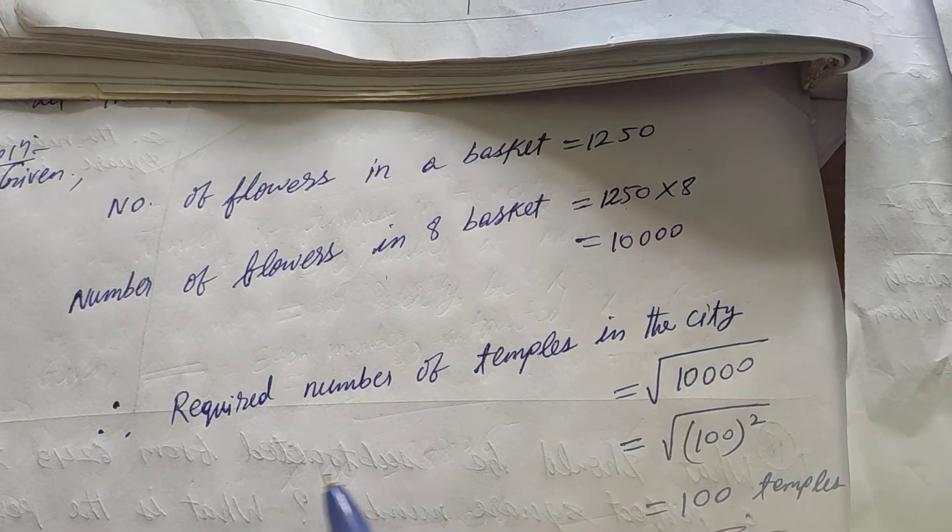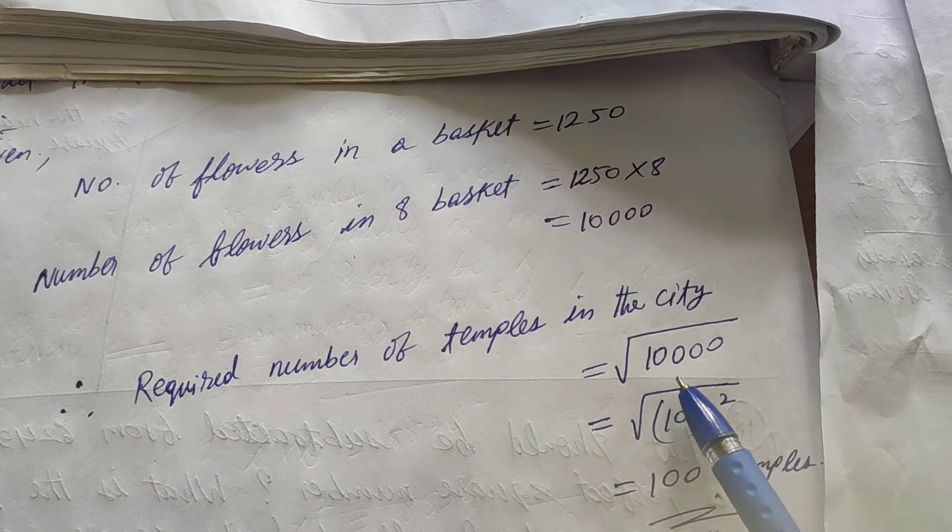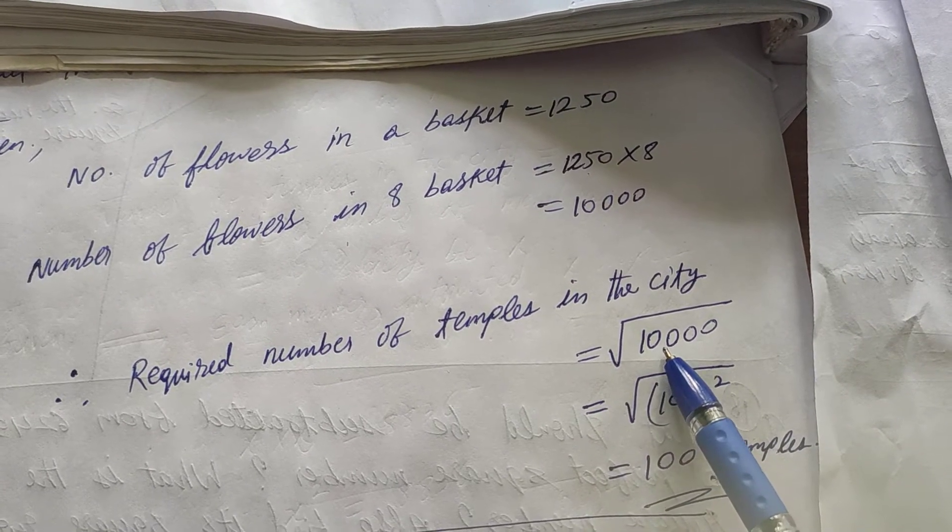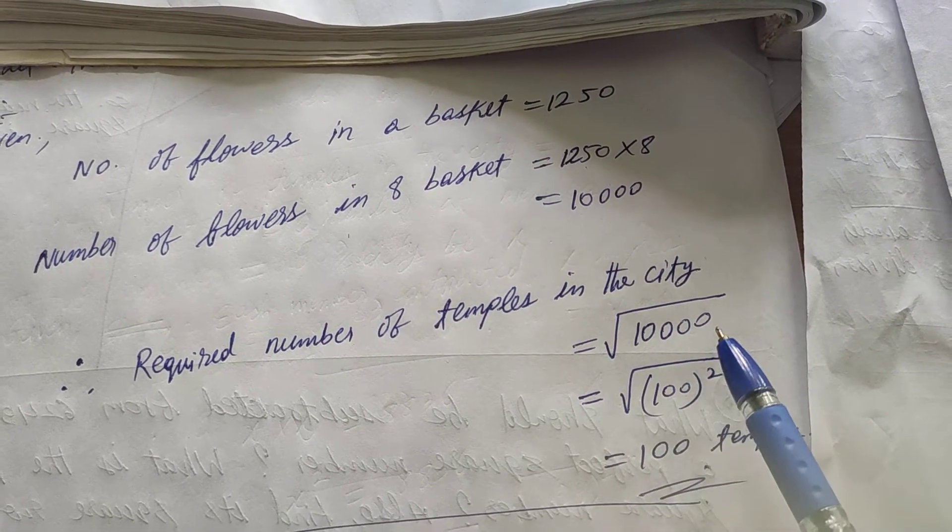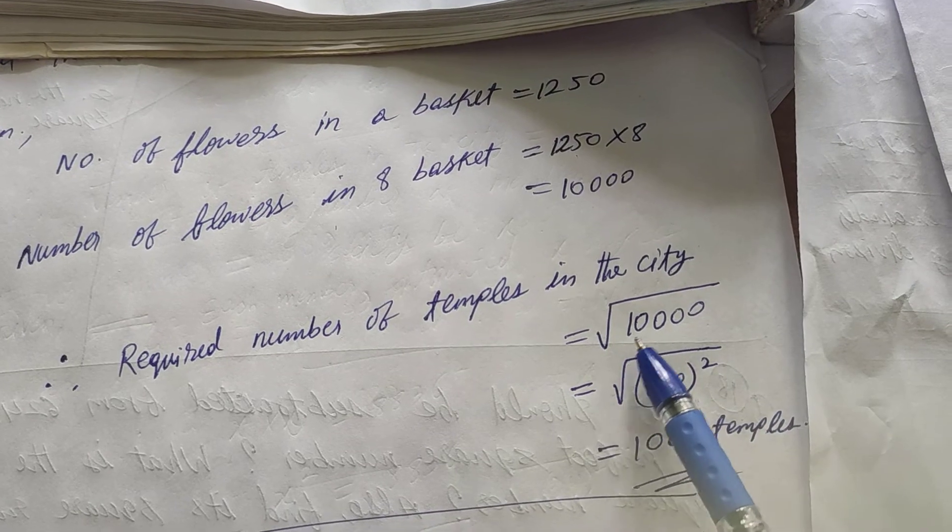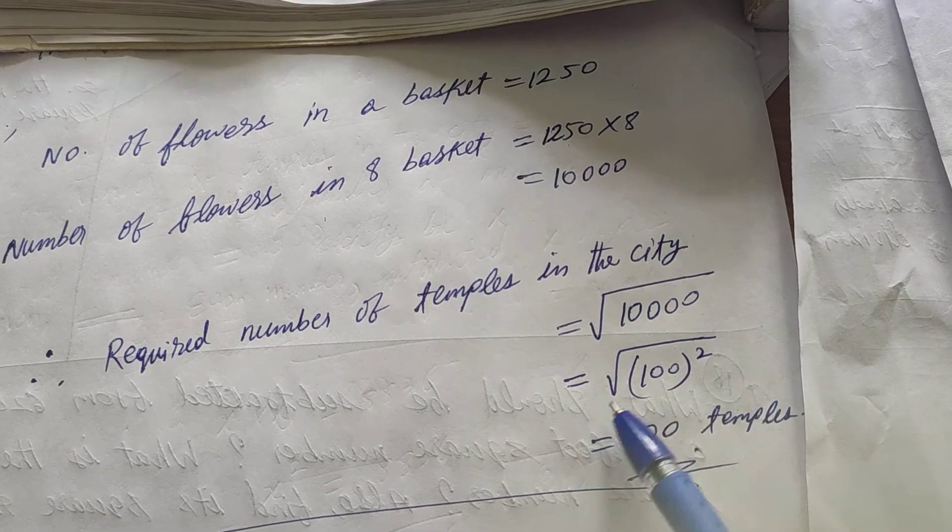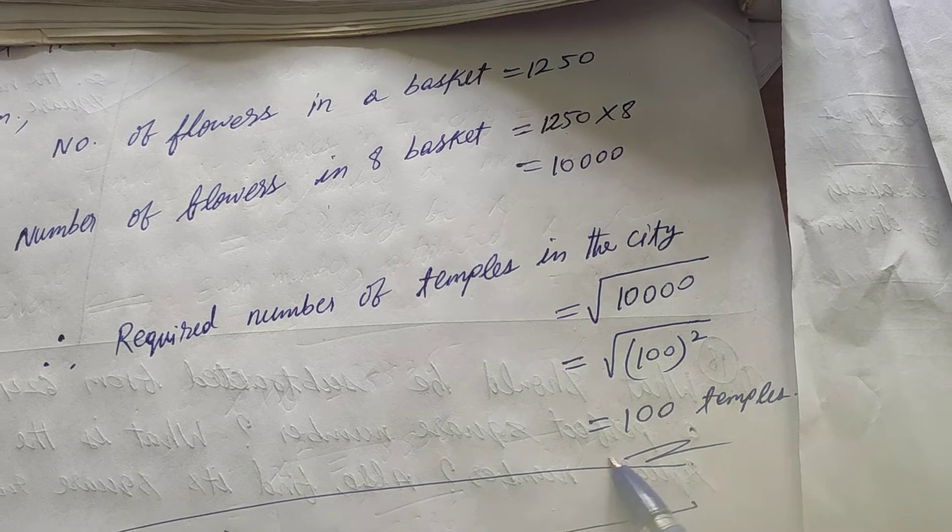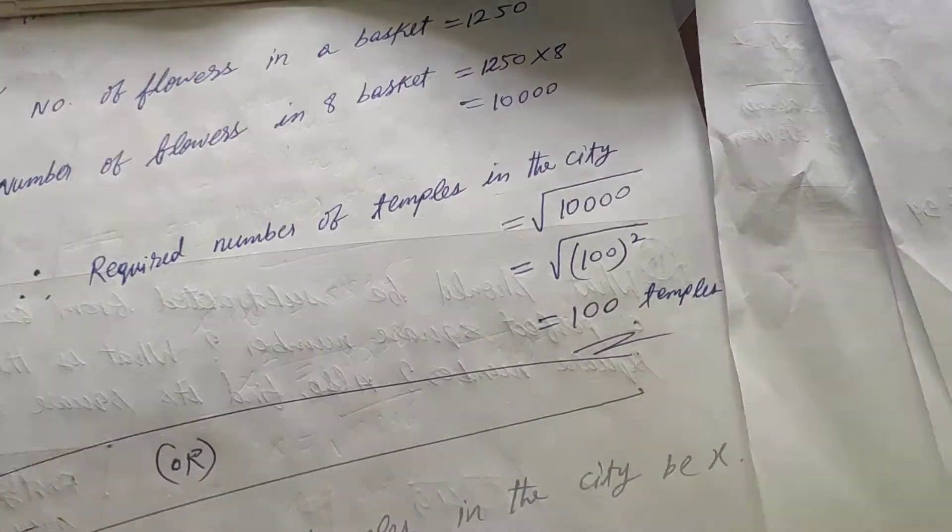So, the required number of temples in the city will be how much? It is equal to root over of 10,000. So, 10,000 root is how much? 100. So, it is equal to 100 temples. Clear?